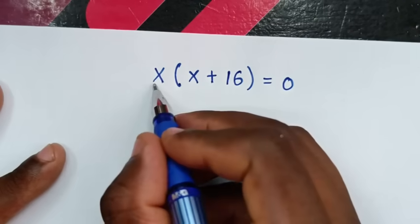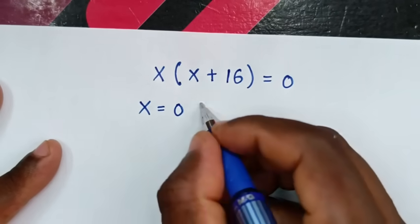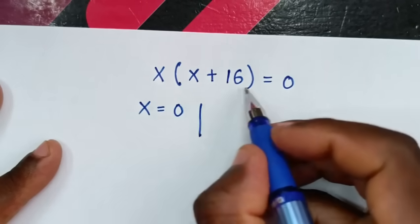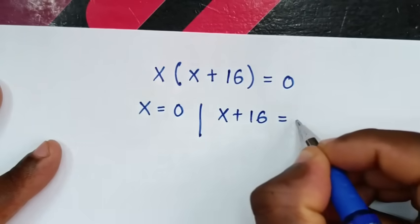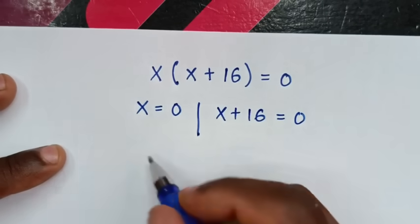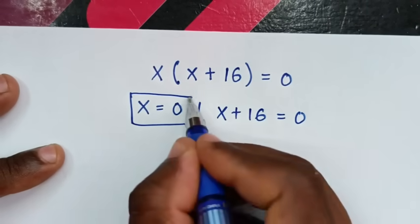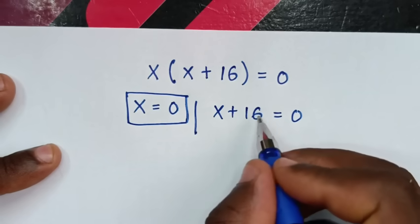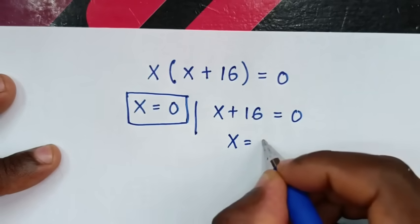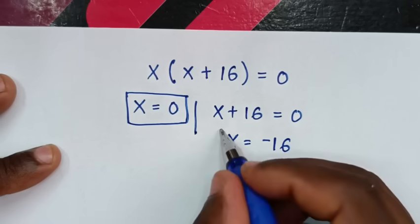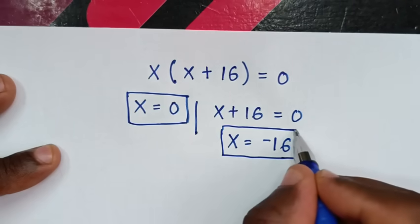From here we have two solutions: the first is x = 0, and the second is x + 16 = 0, which gives x = −16. So this is the second solution for the value of x.